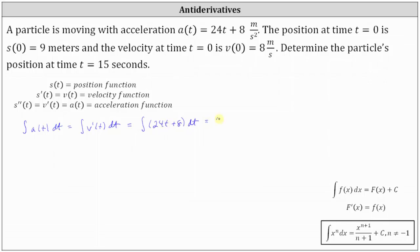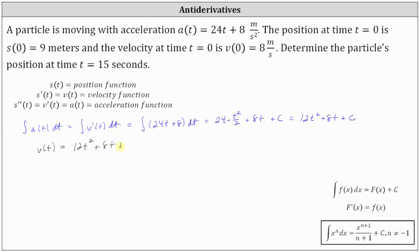The antiderivative is equal to 24 times t² divided by 2, plus 8t plus C. Simplifying, we have 12t² + 8t + C. So now we know the velocity function v(t) must be in the form 12t² + 8t + C. Looking back at the given information, because we know v(0) = 8, we can determine the specific velocity function.